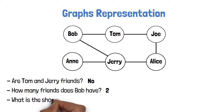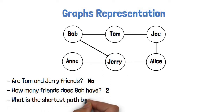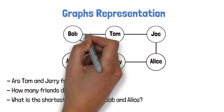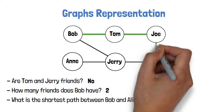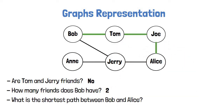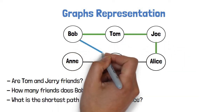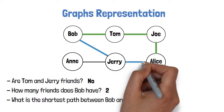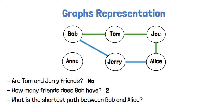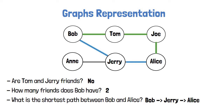What is the shortest path between Bob and Alice? There are two options of getting from Bob to Alice. One is marked in green and goes via Tom and Joe. The second is marked with blue and goes via Jerry. So going via Jerry is the shortest path.